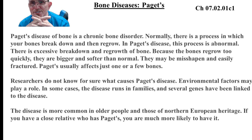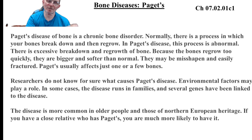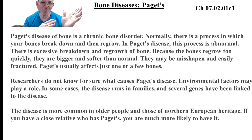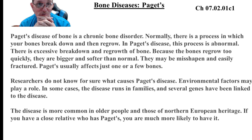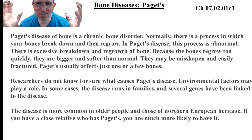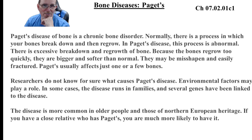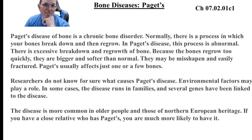Paget's disease of the bone is a long-term process. We know bones undergo remodeling, but in Paget's, the bones break down and the remodeling isn't according to where stress or weight needs to be borne — it's kind of random. The result is a bone that's larger than normal but way weaker. There's excessive breakdown and regrowth — too quickly — producing bigger and softer bones that fracture easily. Usually just one or a few bones are involved. Nobody knows what causes it — possibly environment, and some have inherited it. It tends to affect older people and those of Northern European descent.